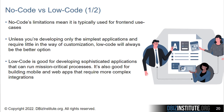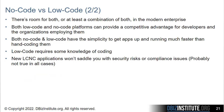Let's take a look at some of the differences between no-code and low-code. No-code's limitations mean that it's typically used for front-end cases — things like the development of forms and simple databases where the forms are stored. So unless you're developing only the simplest applications that require very little in the way of customization, low-code will probably be your best option. Low-code is good for developing sophisticated applications that can run mission-critical processes, but it's also great for building mobile and web apps that require more complex integrations. But there's room for both, or at least a combination of both in the modern enterprise.